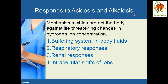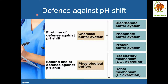The mechanisms which protect the body against life-threatening changes in hydrogen ion concentration are: first, the buffering system in the body fluid; second, respiratory responses; third, renal responses; and fourth, intracellular shifts of ions. The first line of defense against pH shift is the chemical buffer system, which can react immediately within milliseconds.